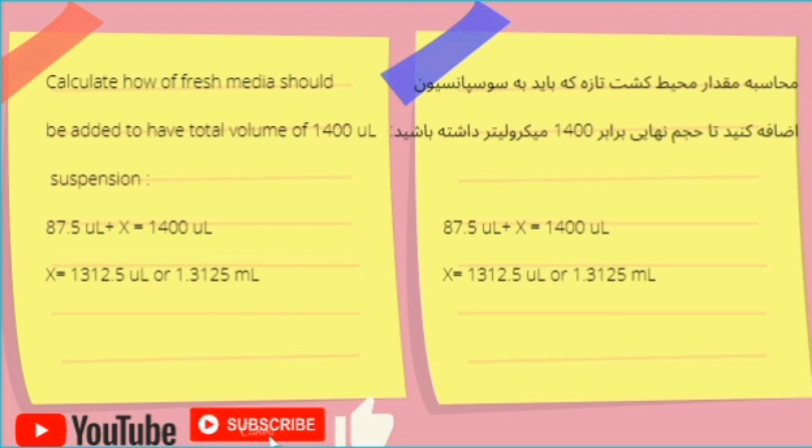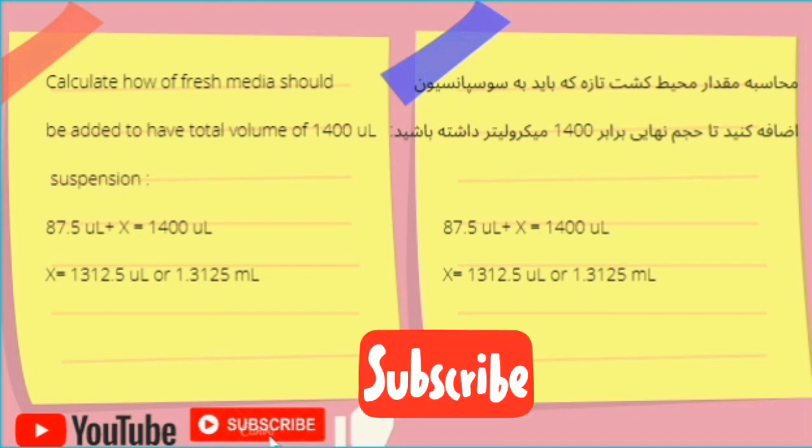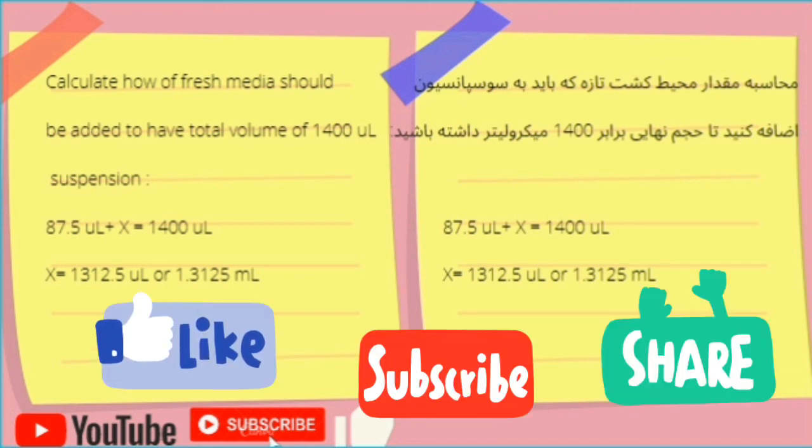And you're done! You successfully calculated the volumes. Now you can take 200 microliters from this total media you made and seed it or inject it, and be sure you have 75,000 cells in each well. Thank you for watching this video. Don't forget to subscribe, like, and share it with your friends.